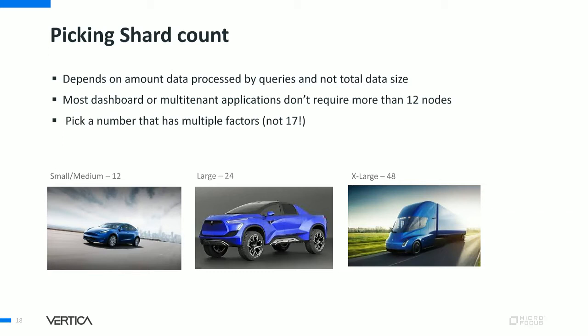Don't pick a prime number for shard count. We suggest 12 for most customers; if your queries process terabytes of data, pick a number like 24. Vertica is also coming up with features like round scaling that will help you run queries on more nodes than the number of shards you picked. If you have picked a smaller shard count, it's not the end of the story.